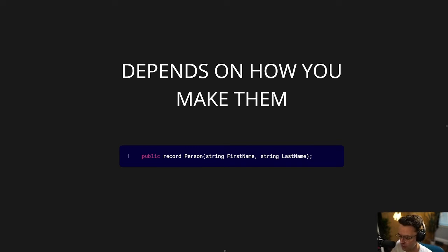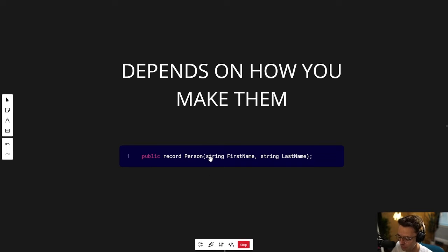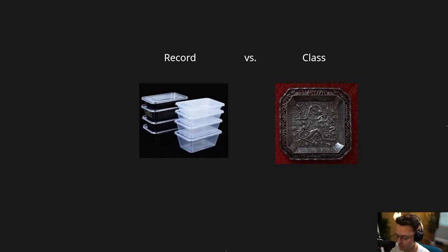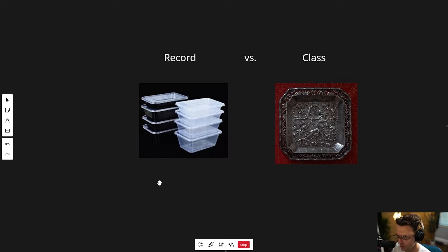These enthusiasts do have a point. Whenever we use records in the one-line fashion, which is 90% of the time why you're actually going to use a record, they are going to be immutable. The best way to describe the difference between a record and a class is to compare meal prep Tupperware containers versus 19th century silver.